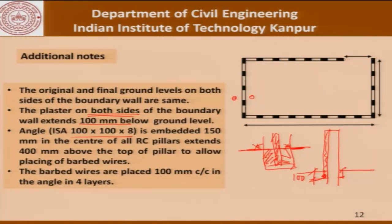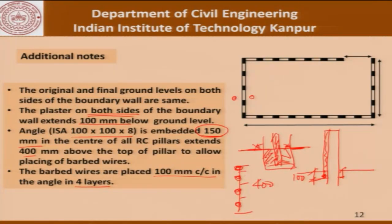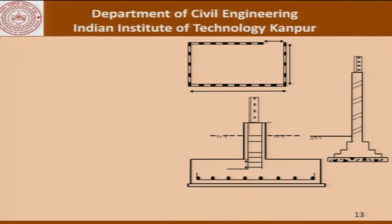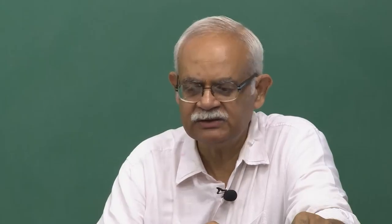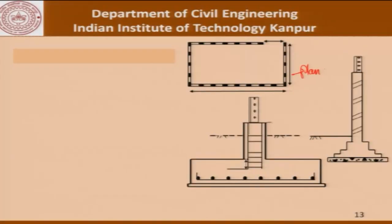The plaster on both sides of the wall extends 100 mm below ground level. The ISA 100-108 angle is embedded 150 mm in the center of the RC pillar and extends 400 mm above the top of the pillar to allow placement of barbed wires. The barbed wires are placed at 100 mm center to center in the angle, in 4 layers.